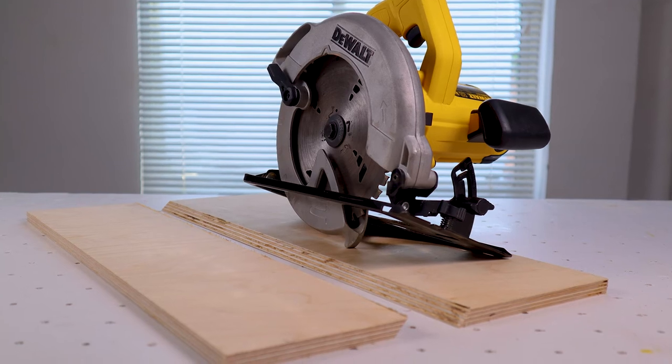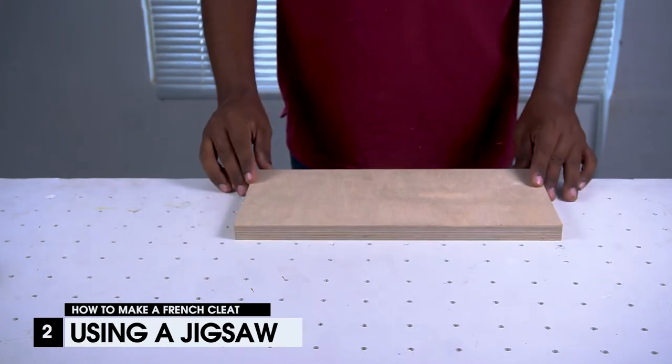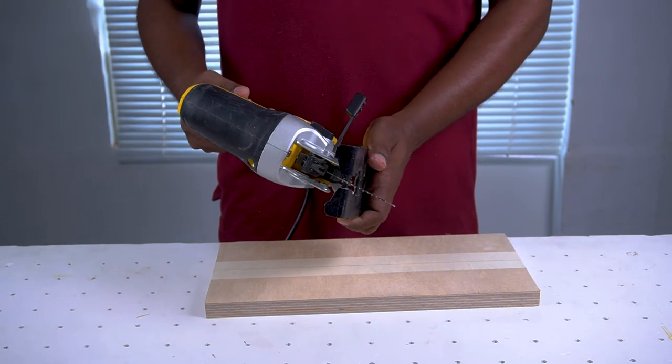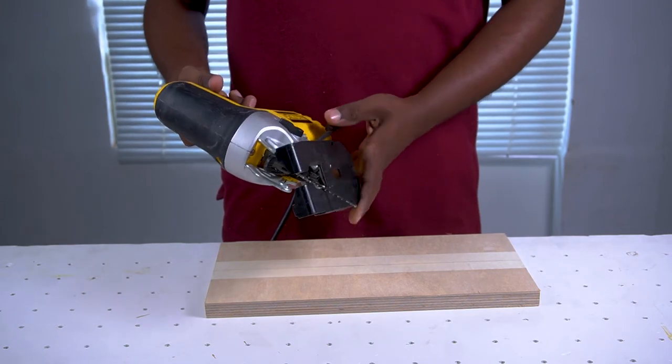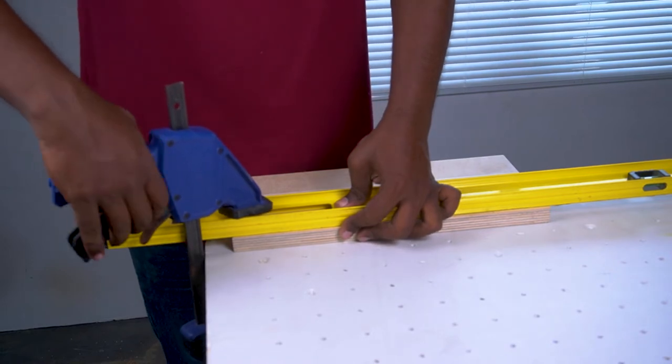Now your French cleat is finished and ready to be used. The second method is by using a jigsaw. Draw the cut line using a pencil. Tilt the base of the jigsaw to make an angle of 45 degrees. Clamp the wood on the table along with a straight edge or table for guiding the jigsaw.